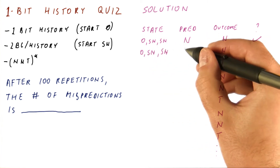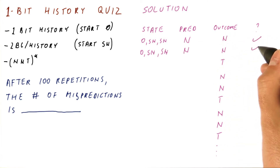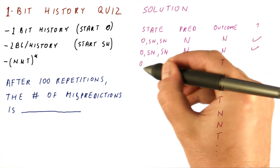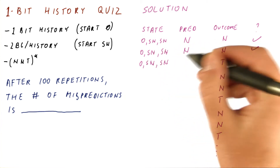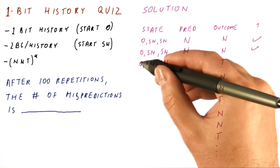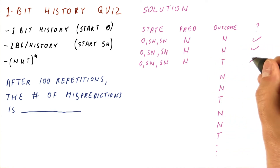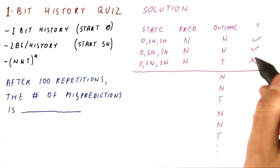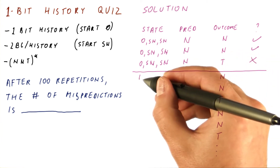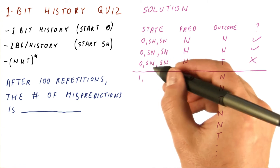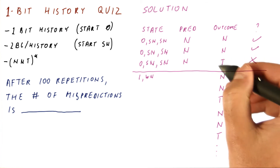The predictor again predicts not taken using history zero and strong not taken, and is again correct. The history stays at zero, and strong not taken stays strong not taken. Then, with history of zero, we predict not taken strongly but are wrong this time — the outcome is taken. So after one round, we have a single misprediction. The history becomes one, and the predictor is updated to weak not taken because there has been a taken outcome. The other predictor stays the same.